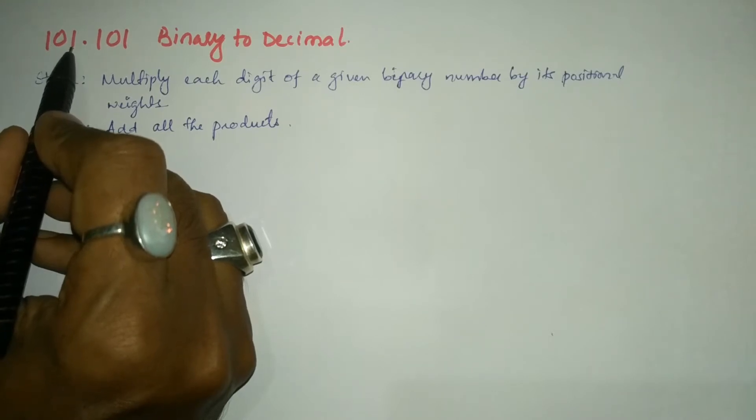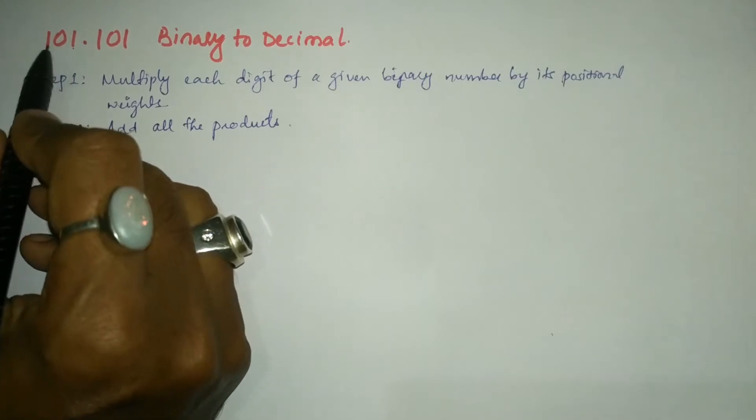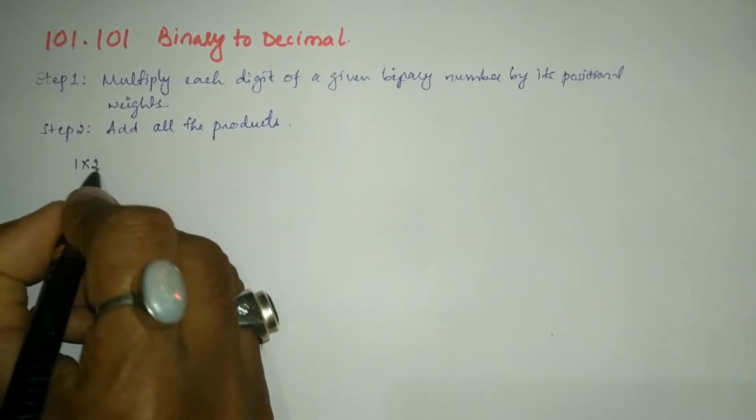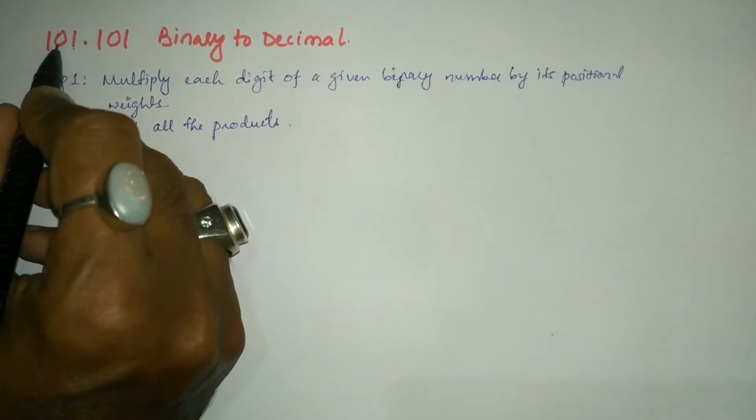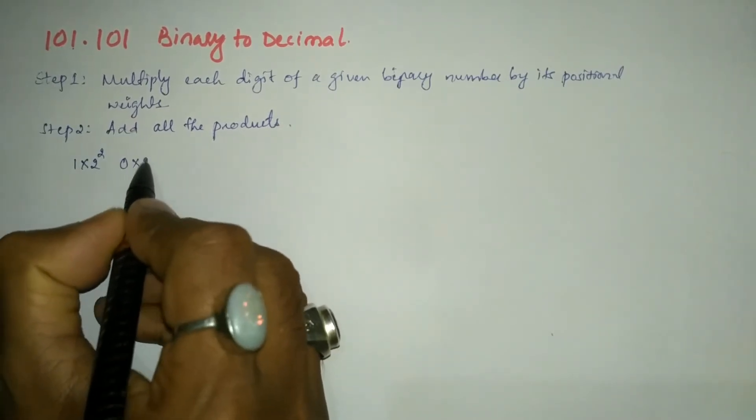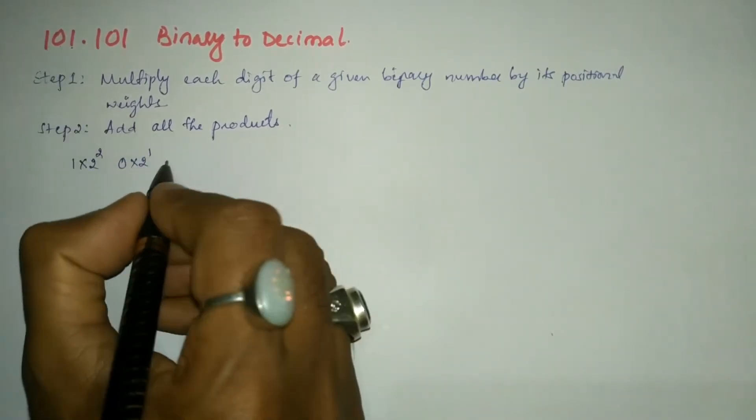Here the positional weight of this one is zero, one, two. So I have to write 1×2², next is 0×2¹, next bit is 1×2⁰.